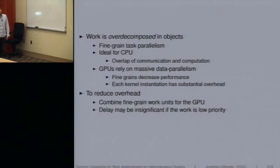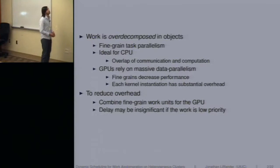We assume that our work is over-decomposed in objects, so you have this fine-grained task parallelism that you get in Charm++, and hopefully the way you've decomposed this is ideal for the CPU. You have overlapping communication and computation, but GPUs rely on basically the opposite. They need massive data parallelism. So fine-grains in this case actually decrease performance, and one of the reasons is because kernel instantiation has substantial overhead. There's also memory copy overhead, and all the overheads associated with moving stuff to the GPU.